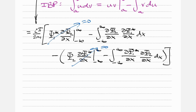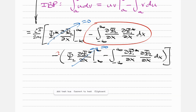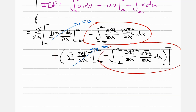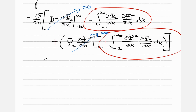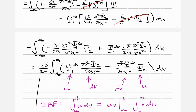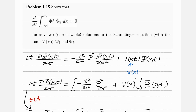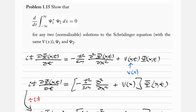After the boundary terms vanish, we see that the two remaining integral terms are identical but with opposite signs: minus the integral plus the same integral, giving zero. Therefore i h-bar over 2m times zero equals zero, and thus the time derivative of the integral from minus infinity to infinity of psi 1 star psi 2 dx is equal to zero, provided both wave functions satisfy the Schrödinger equation with the same potential V(x).